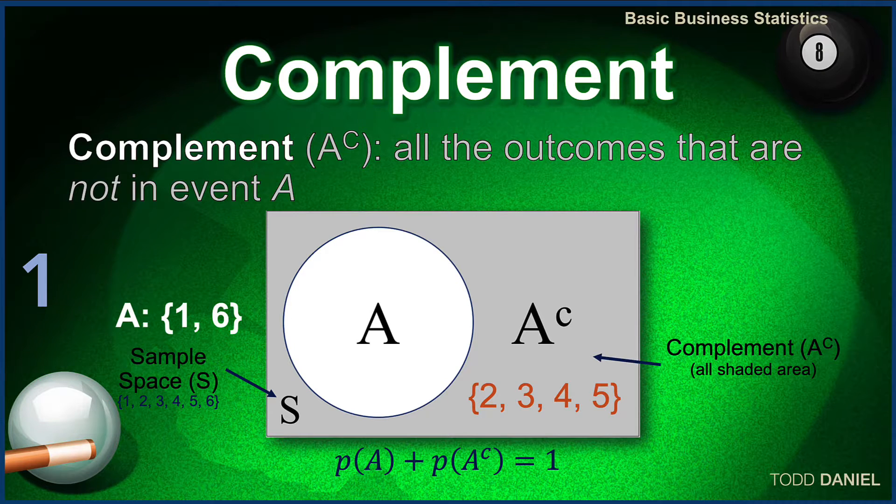And as you can imagine, if you add the probability of A to the probability of the complement of A, those two probabilities must add up to 1.